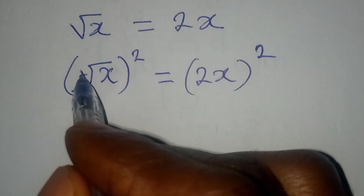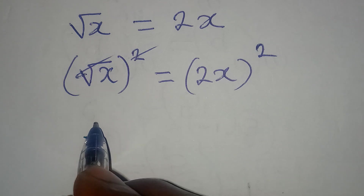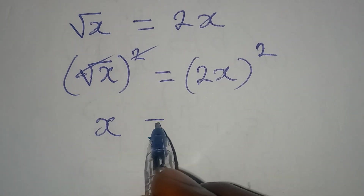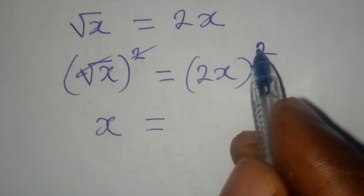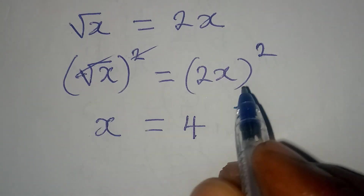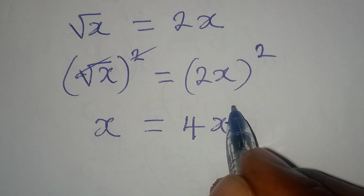The square root and the square will cancel each other, so x will be equal to 2 squared is 4, and then x squared will follow.